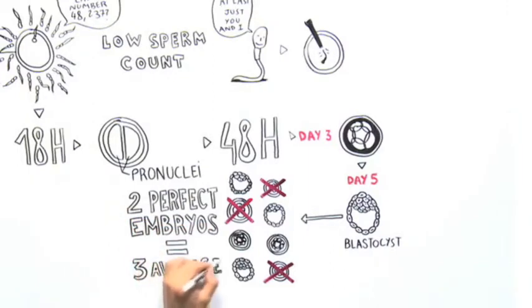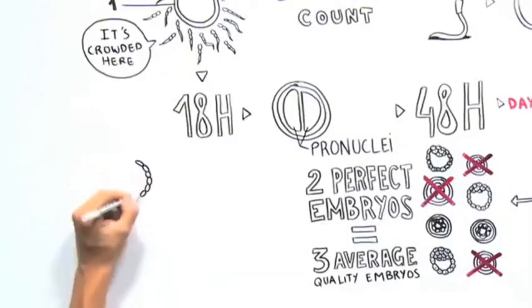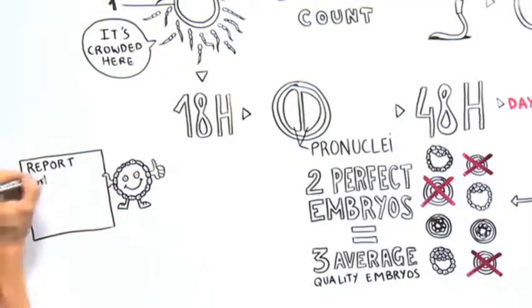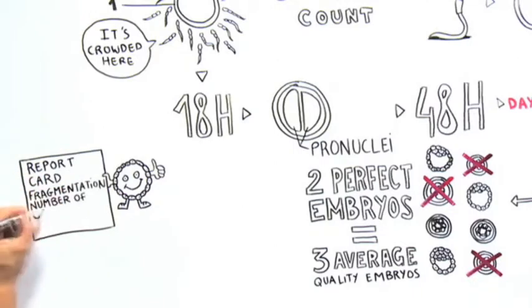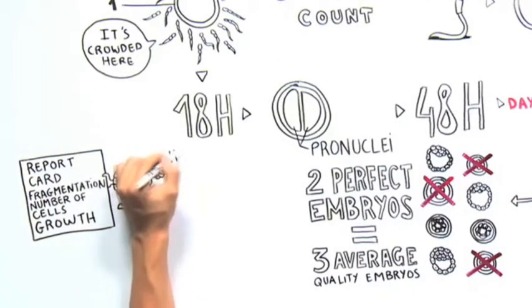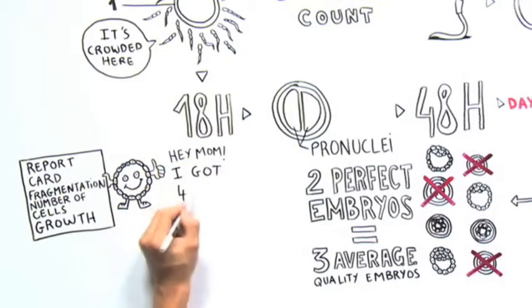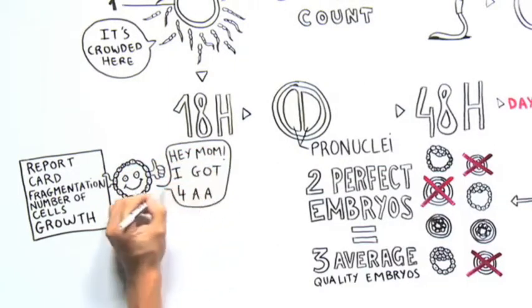For example, 2 perfect embryos are equal to 3 average embryos. Embryos are graded by the embryologist based on the degree of fragmentation, the number of cells, and evenness of growth. An example of a perfect day 3 embryo would be a grade 1, 8 cell. A perfect blastocyst would be graded as 4AA.